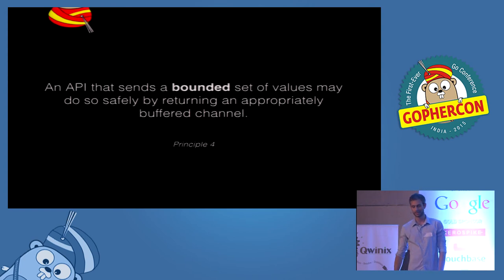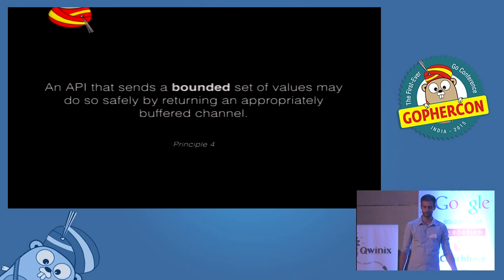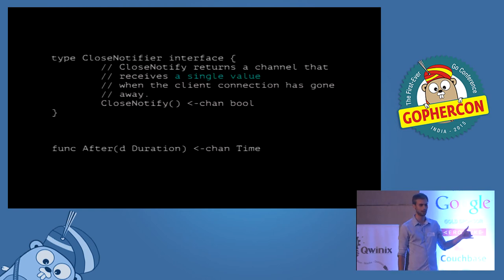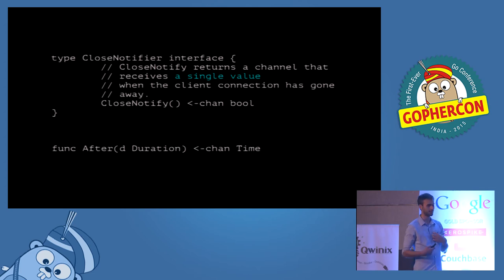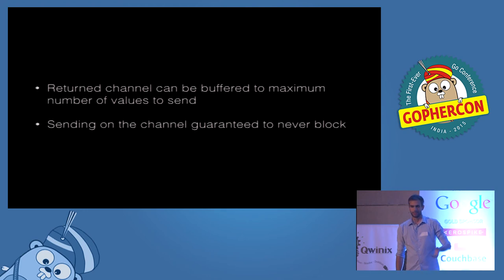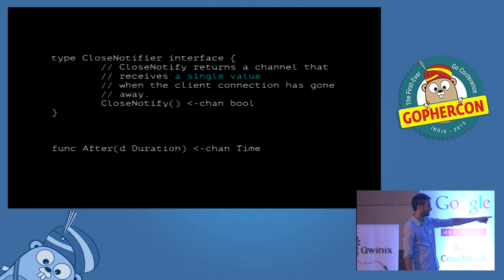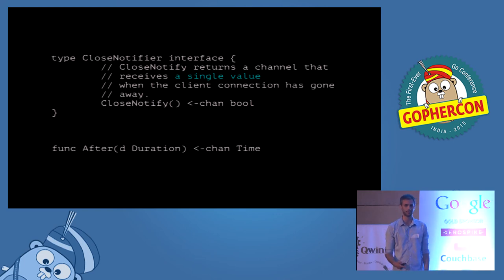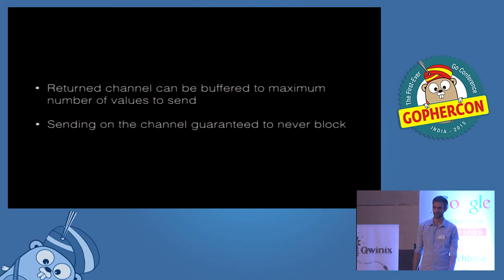The converse of these rules: an API that sends a bounded set of values may do so safely without worrying about slow consumers by returning an appropriately buffered channel. This is the `CloseNotifier` interface from `net/http` — it returns a channel that receives a single value. Because the channel has the directionality operator, no one can send values into it except the implementation. Since only one value ever gets sent, if the library creates a channel with space for one, it is always guaranteed to succeed — it never has to block and doesn't need to document that.